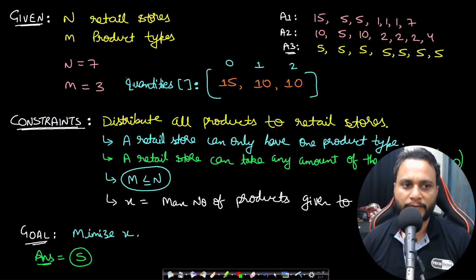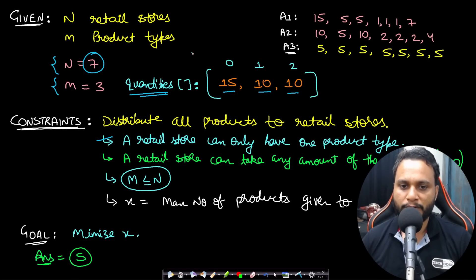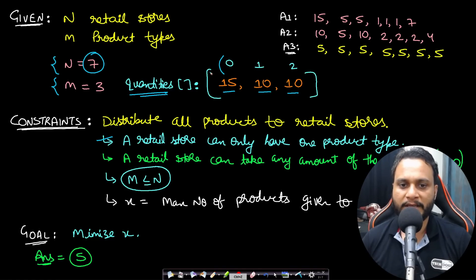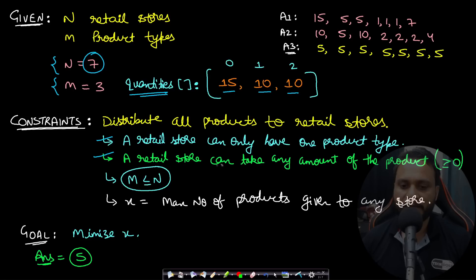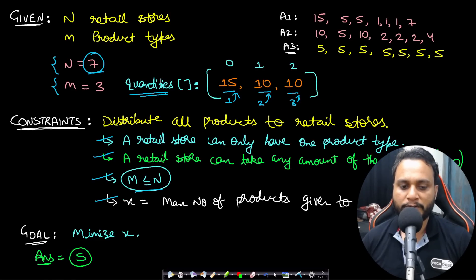Let's look at an example for better understanding. Consider n equals 7 and we have three product types with quantities 15, 10, and 10. We need to distribute all products to the seven retail stores. The constraint is a retail store can only have one product type — you cannot assign two units from product type 0 and one unit from product type 1 to the same store. All items in a store must be the same type, though a store can take any amount including zero.